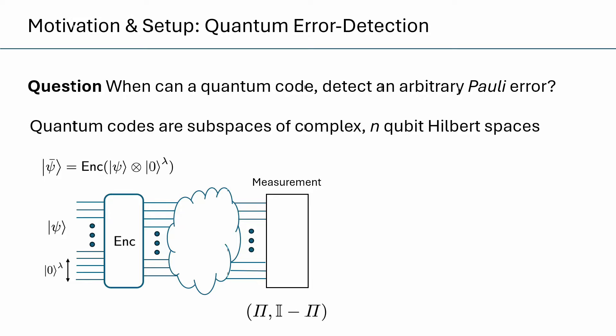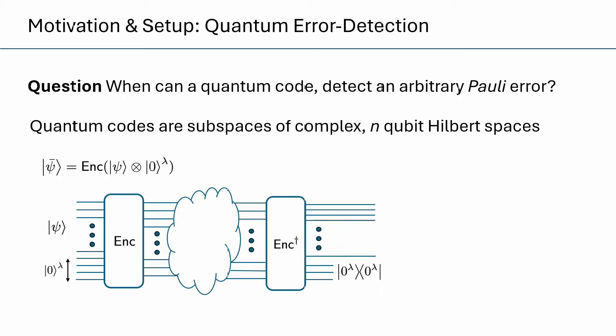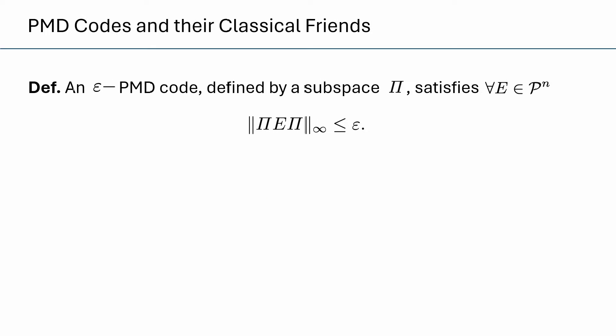Under the hood, all we're doing is reversing the encoding operation and checking if the string of all zeros in our security pad remains all zeros. With this in mind, we can ask what are the constraints on this measurement to be able to detect from a class of errors? This brings me to the main technical definition: I'll call a subspace pi to be an epsilon PMD code if, for all errors E, the top singular value, or operator norm, of pi E pi is bounded by epsilon. All that it's saying is that if you take two orthogonal code words in the subspace and you tamper with one of them, they remain nearly orthogonal — the inner product is still bounded by epsilon.